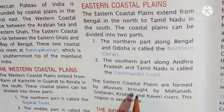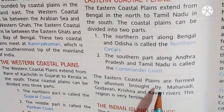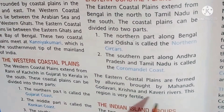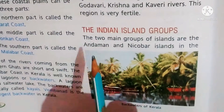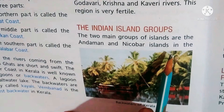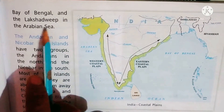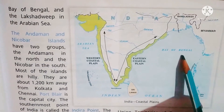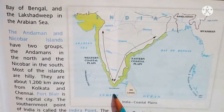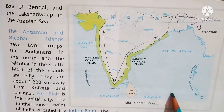The eastern coastal plains are formed by alluvium brought by the Mahanadi, Godavari, Krishna, and Kaveri rivers. India has two main island groups — the Andaman and Nicobar Islands in the Bay of Bengal, and Lakshadweep in the Arabian Sea.